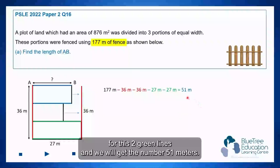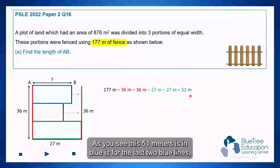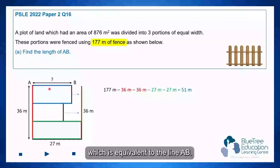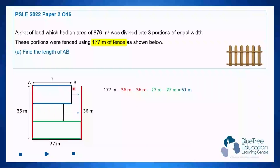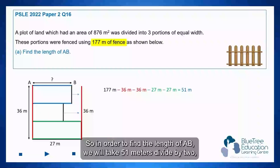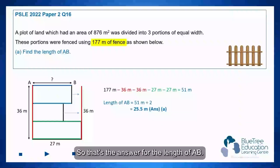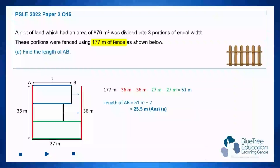We get 51 meters. This 51 meters is in blue — it's for the last two blue lines, which is equivalent to the line AB. So in order to find the length of AB, we take 51 meters divided by 2, which gives the answer 25.5 meters. That's the answer for the length of AB.